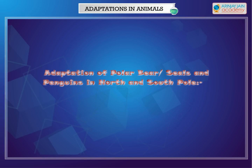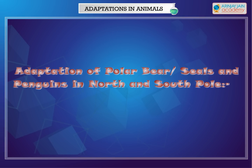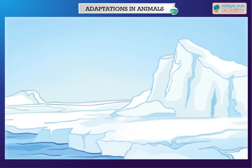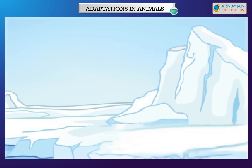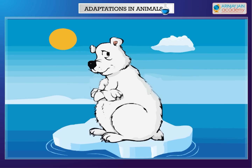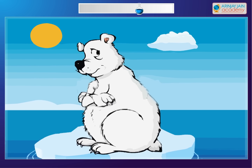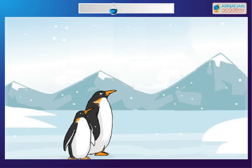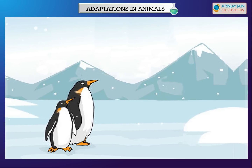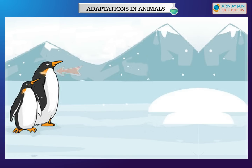Adaptation of polar bear, seals and penguins in North and South Pole. The North and South Poles are covered with snow throughout the day and food is also scarce. The polar bear inhabits the North Pole. Polar bears have fur on their bodies to keep them warm. Some animals like seals and penguins have a thick layer of fat under their skin called blubber which keeps them warm.